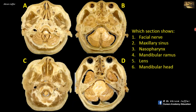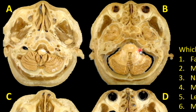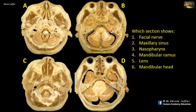Which section shows the facial nerve, maxillary sinus, nasopharynx, mandibular ramus, lens, and mandibular head? These are horizontal sections of the head. The facial nerve leaves the posterior cranial fossa through the petrous temporal bone, passing through the internal auditory meatus together with the vestibulocochlear nerve. Section B shows the facial nerve. The maxillary sinus is located in the maxillary bone, visible in the lowest section that contains the bones of the face below the orbit, showing the maxillary sinus lateral to the nose.